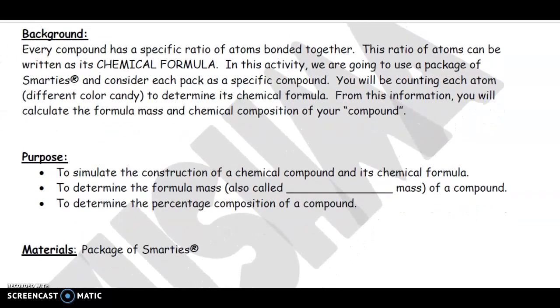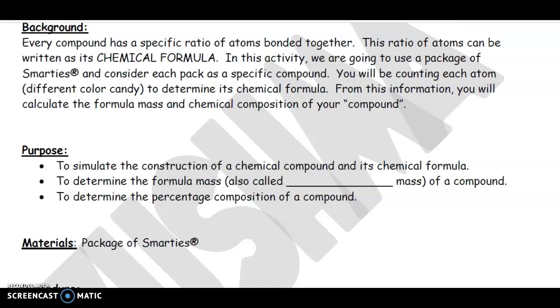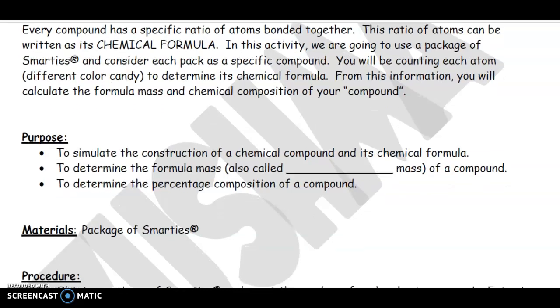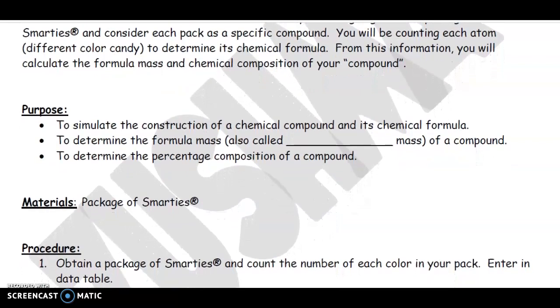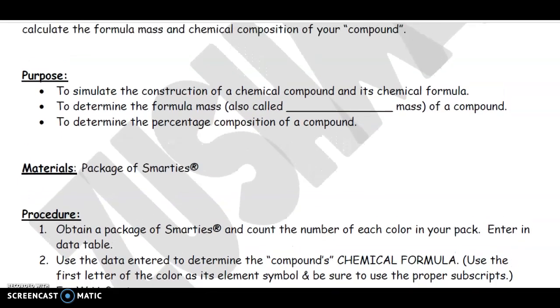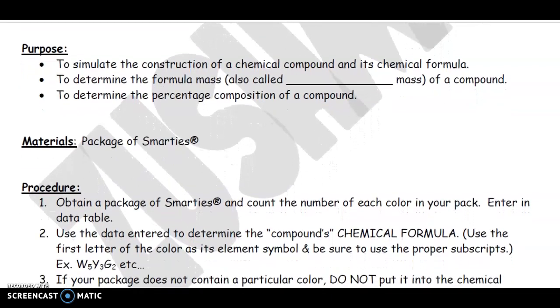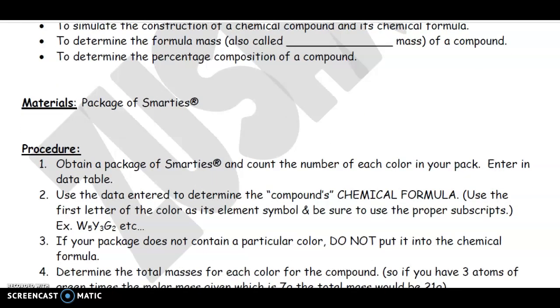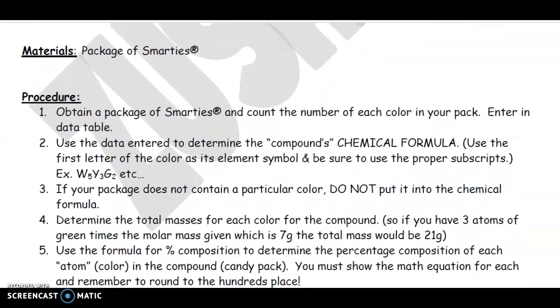So every compound has a specific ratio of atoms bonded together. This ratio of atoms is written as a chemical formula, and we know that H2O has two H's and one O. In this activity, we're going to use a packet of Smarties and consider each pack a specific compound. You're going to be counting each atom, which are just the different color candies, to determine its chemical formula. From this information, you're going to calculate the formula mass, which is what we call our molar mass, and the chemical composition or percent composition of your compound. So the purpose of this activity is to simulate the construction of a chemical compound and its chemical formula, to determine the formula mass, also known as the molar mass of the compound, and to determine the percent composition of the compound.